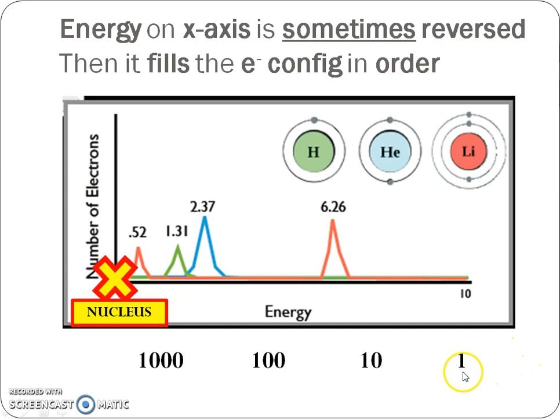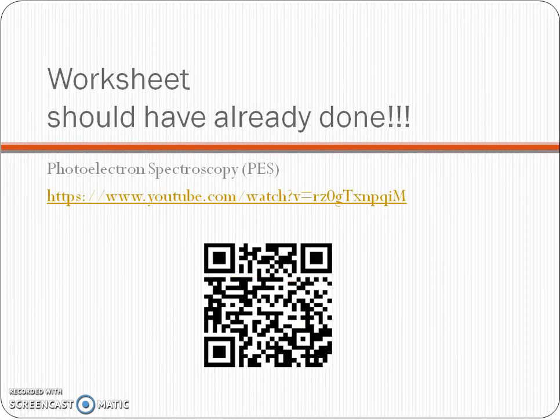It takes a lot more energy to remove those two inside electrons than it does for that one valence electron on the outside. That's why lithium is very reactive. It has that one valence electron and it doesn't take much energy at all to remove that one valence electron versus look how big of a gap this is, 0.5 to 6.3 to remove those other inside ones. This is what I was talking about. Most of the time, the energy on the x-axis is reversed. It usually is filled up like an electron configuration order, just like that worksheet that you should have done.